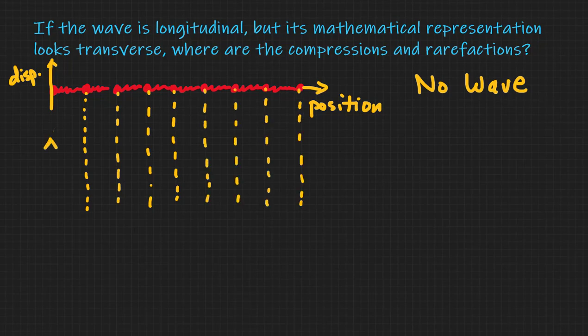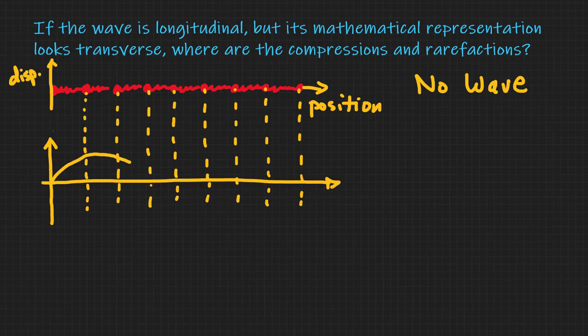So now what we're going to do is imagine this transverse representation and think about what it means. So let's now imagine what's going to happen to the beads if the wave looks just like this.